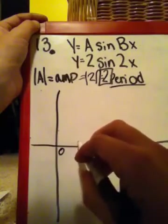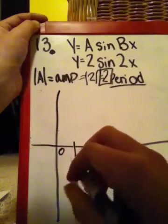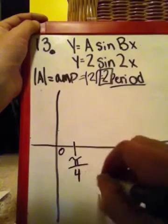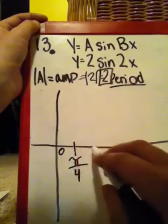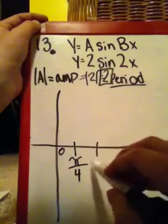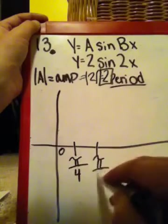And then, I'm going to point my first point, which is π over 4. And if you add another fourth to π over 4, you end up with π over 2.